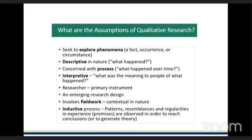There are certain assumptions of qualitative research — previously we looked at terms like ontological, cosmological, axiological, rhetorical, and methodological — and this is really just breaking those down into everyday language. Qualitative research seeks to explore phenomena: a fact, an occurrence, or circumstance. It is descriptive in nature — it looks at what happened. It is concerned with the process, examining what happened over a period of time and how phenomena changed.